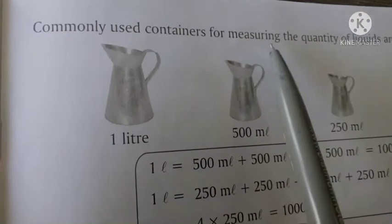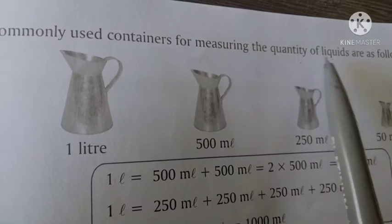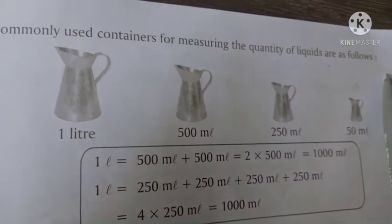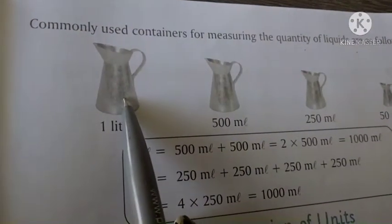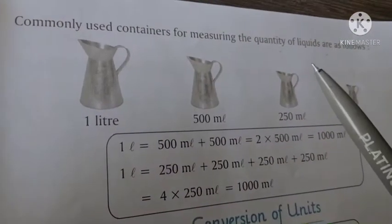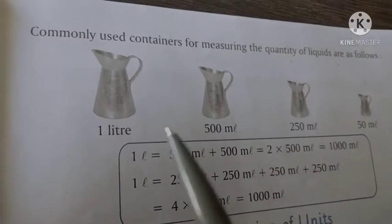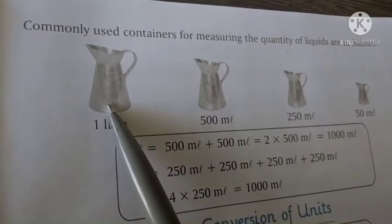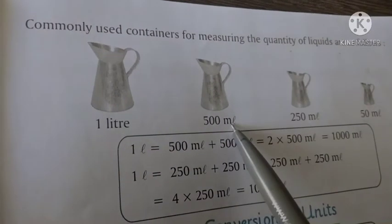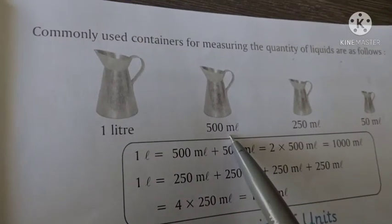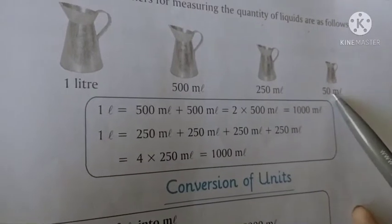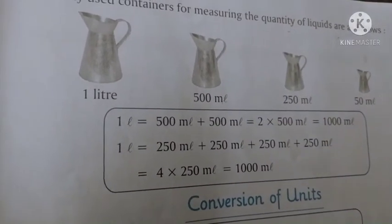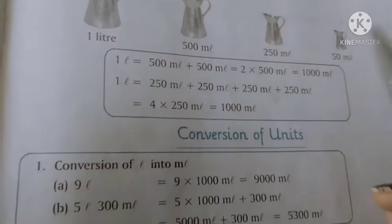Commonly used containers for measuring the quantity of liquids are as follows: 1 liter - yeh dekho big container hai; 500 ml - chhota container; 200 ml - usse chhota container; aur 50 ml - ekdam thoda sa container.